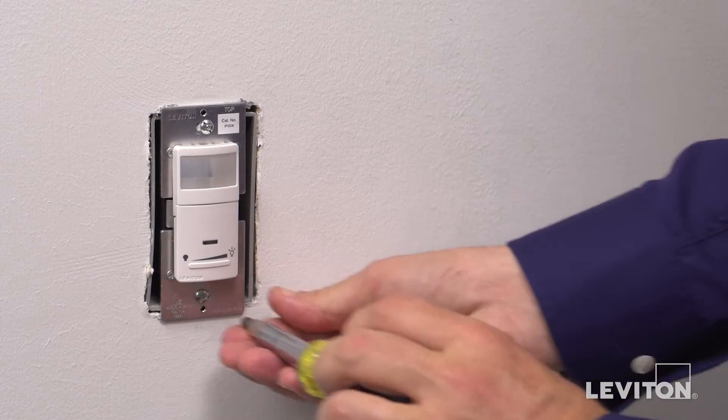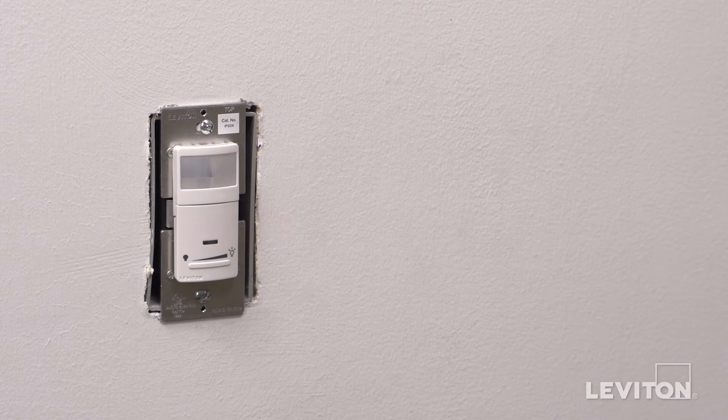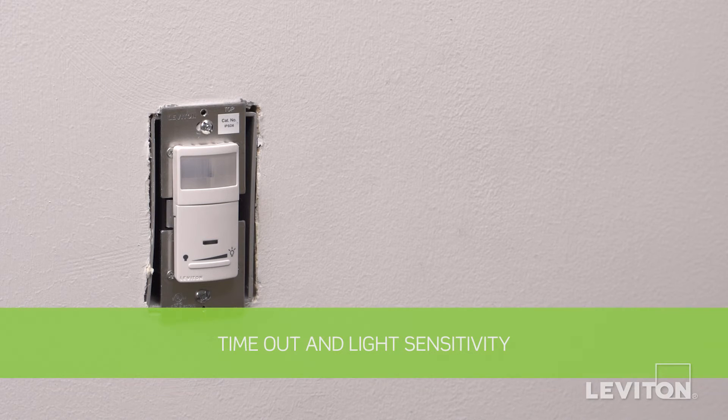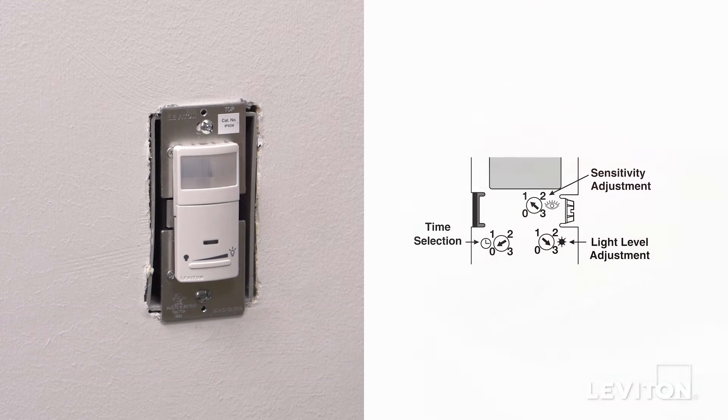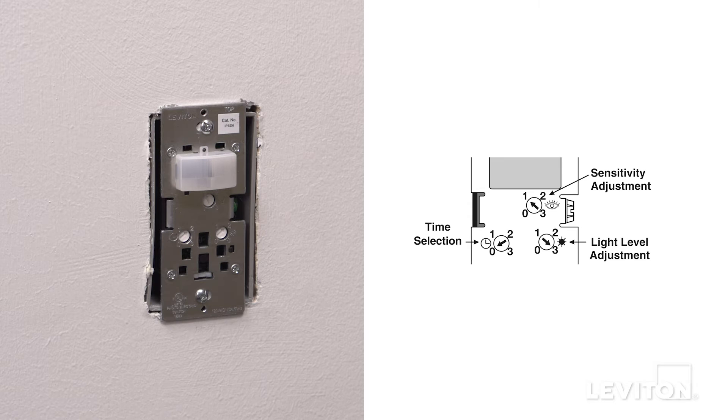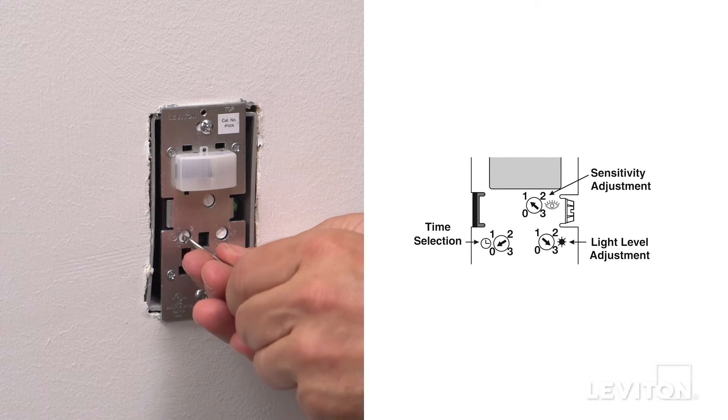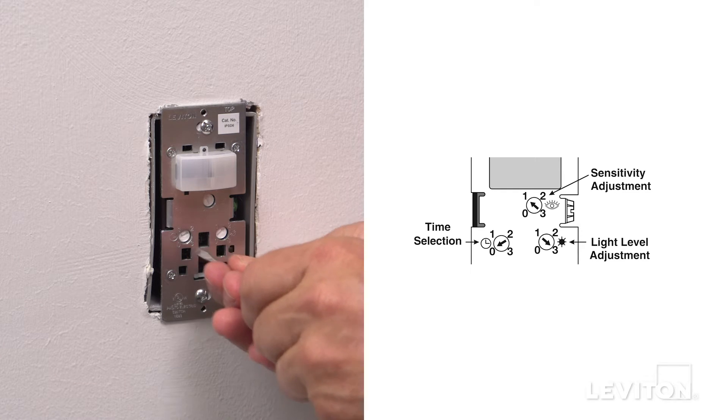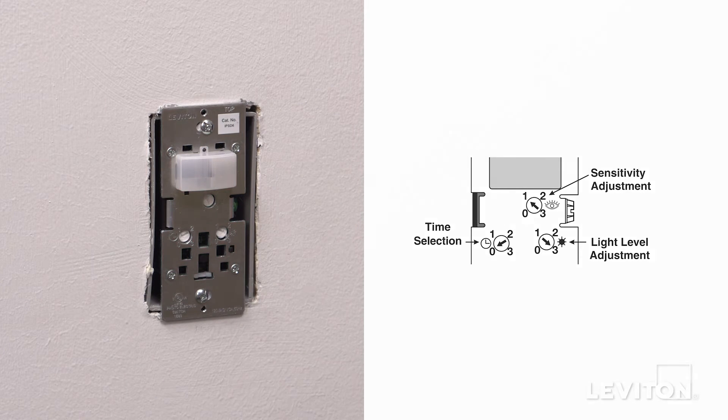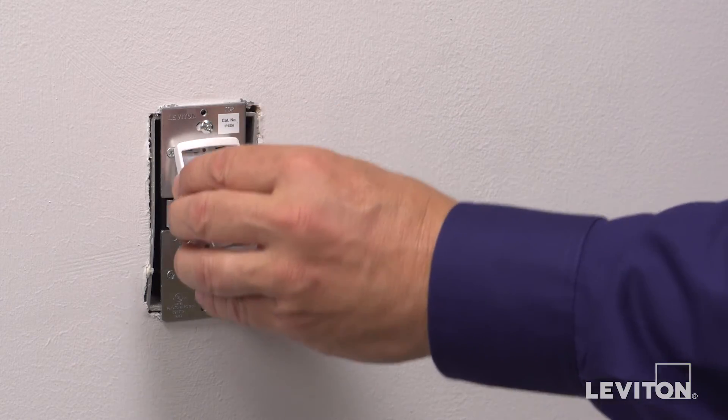We will now test the device prior to mounting in the wall box. First, we will adjust timeout and light sensitivity levels. Remove the face cover of the sensor to expose the adjustment dials. Set time selection of the sensor to 30 seconds for a quick timeout during testing. Set the light level dial full clockwise. Place the face cover back on the sensor.